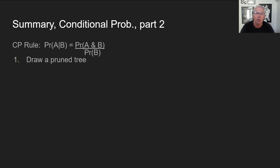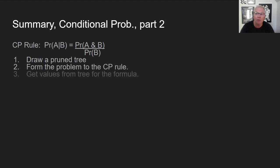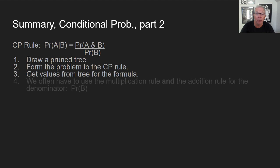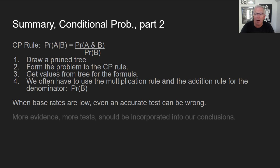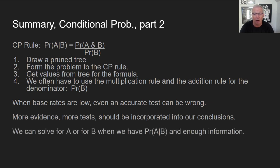That's the end of our second lecture on conditional probability. There's the rule, which you should know very well now. We've been drawing trees, forming the problem to the conditional probability rule, and getting values from the tree for the formula. We often have to use the multiplication rule and the addition rule for the denominator. When base rates are low, even an accurate test can be wrong. More tests should be incorporated into our conclusions. And we can solve for A or B when we have the probability of A given B, working backwards mathematically. That's our two lectures on conditional probability for class.